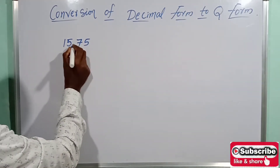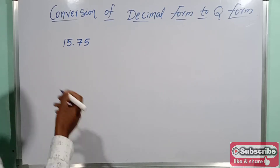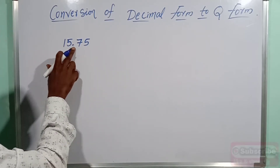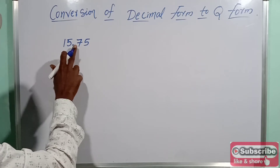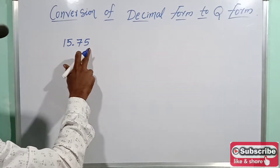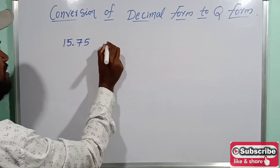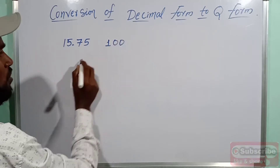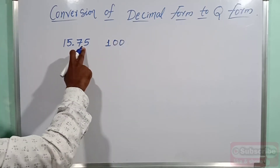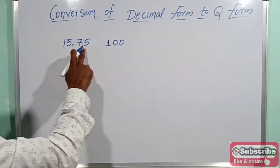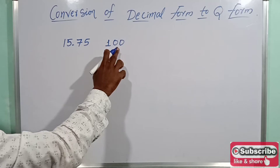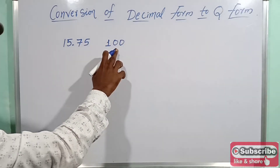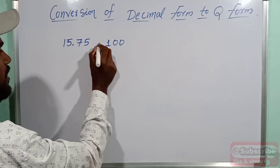Now I am going to convert this into rational form. See here — how many decimal places are there? Two decimal places. For the denominator, for point I am writing one, and for two decimal places I am writing two zeros. For example, three decimal places we have to write three zeros — however many decimal places, that many zeros we have to write.